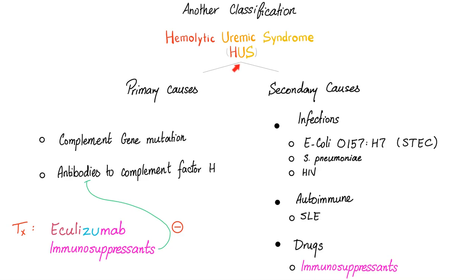There is a new classification for HUS — primary HUS and secondary HUS. Secondary HUS is secondary to a known cause, such as E. coli O157:H7. Think of it like primary vs secondary hypertension: primary means unknown cause, secondary means known cause. Other known causes include Streptococcus (especially in children), HIV, autoimmune conditions like lupus, and drugs such as immunosuppressants. Primary HUS is the diarrhea-negative type — atypical HUS — which can be due to a complement gene mutation or antibodies to complement factor H. Treatment is eculizumab, an antibody against terminal complement proteins, or immunosuppressants if antibodies are driving the disease.